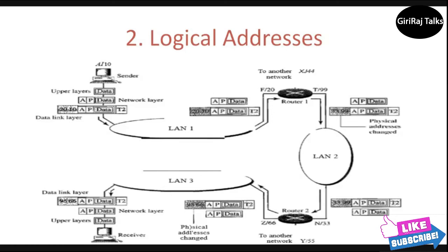Now, the network layer passes this address to the data link layer, which in turn encapsulates the packet with physical destination address 20 and physical source address 10. The frame is received by every device on LAN 1, but is discarded by all except router 1, which finds the destination physical address in the frame matches its own physical address. The router decapsulates the packet from the frame to read the logical destination address P. Since the logical destination address does not match the router's logical address, the router knows the packet needs to be forwarded. The router consults its routing table and ARP to find the physical destination address of the next hop in router 2, which creates a new frame, encapsulates the packet, and sends it to router 2. Note that the source physical address changes from 10 to 99, and the destination physical address changes from 20 to 33.